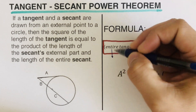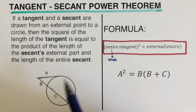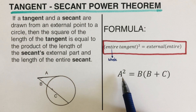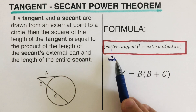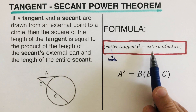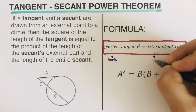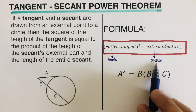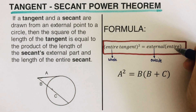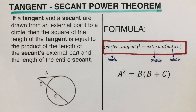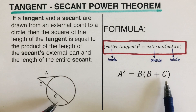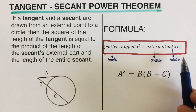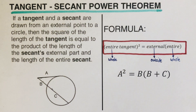Let's define each part of the formula. 'Entire' means the whole thing — so 'a squared' represents the whole tangent squared. 'External' means the outside portion; for the secant, the external part is the length between points B and C, which is B. To get the measure of the whole secant, we add B and C together. So the equation is: tangent squared equals external times entire secant, or a² = b(b + c).